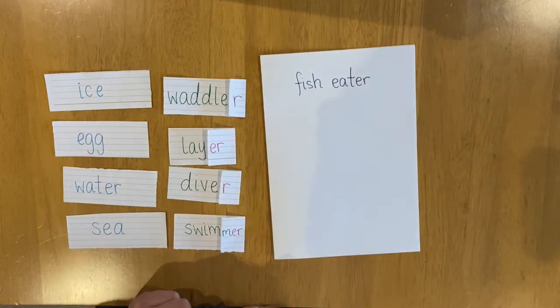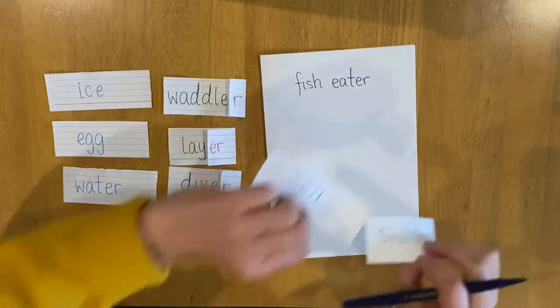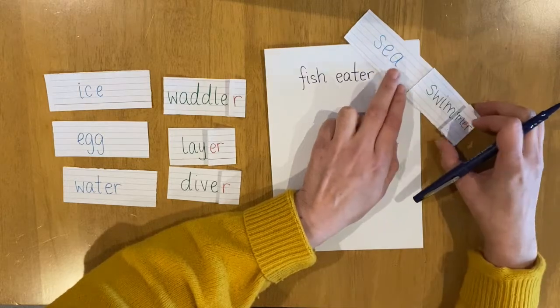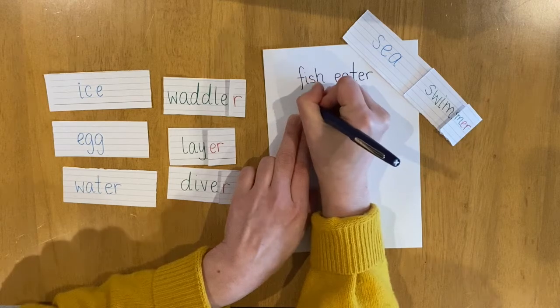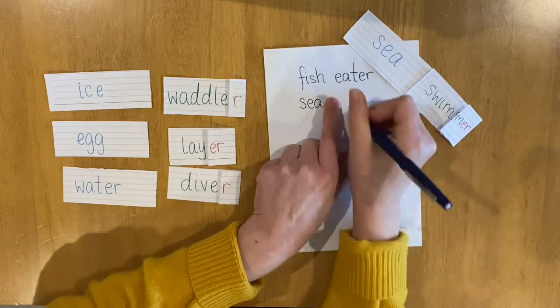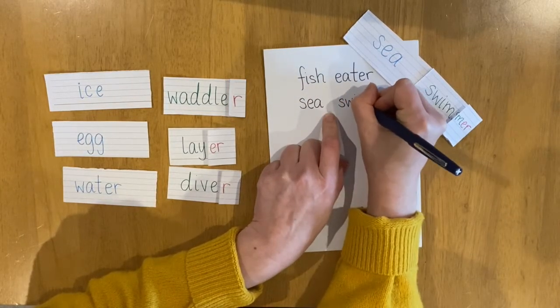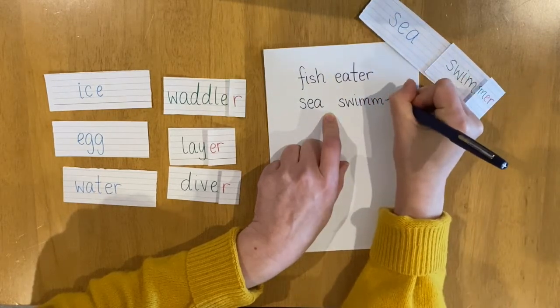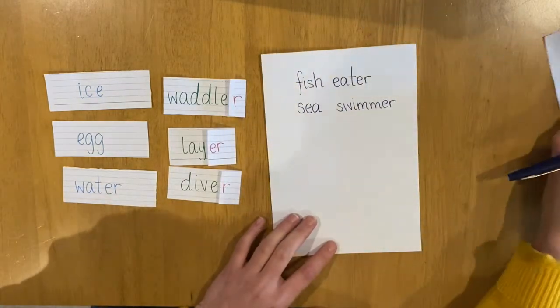The next one. I think I want to use Sea Swimmer next. I like the way that sounds. Sea Swimmer. It's an alliteration where it has two S's at the beginning. Sea Swimmer. I'm going to write it right under. Sea. Finger space. Swimmer. Remember, it's two M's for swimmer because it was a bit of a tricky word. Sea Swimmer. And that one's finished, so I'm going to move that aside.